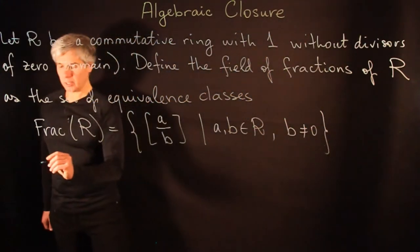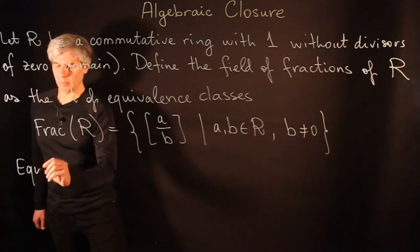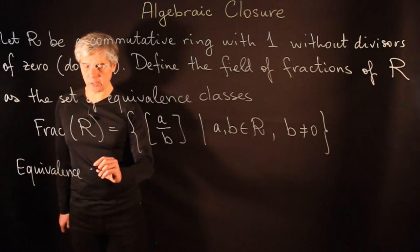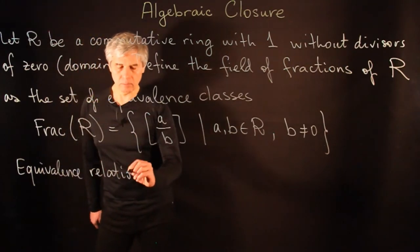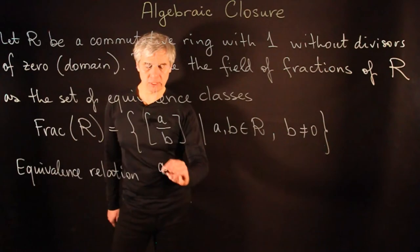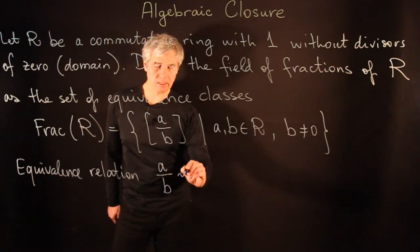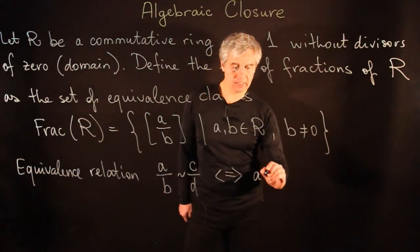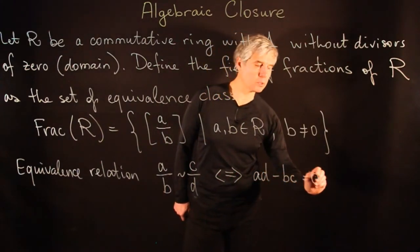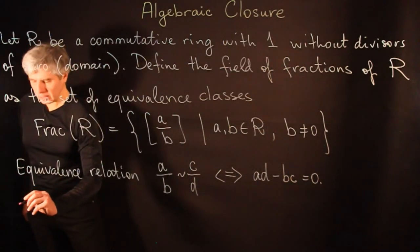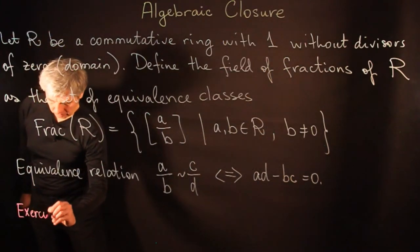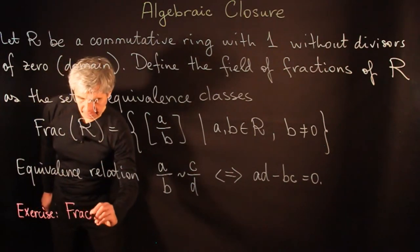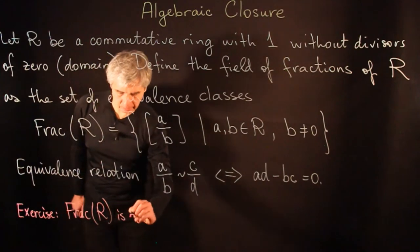The equivalence relation is the same as we use in rational numbers. We say the fractions A over B and C over D are equivalent if and only if AD minus BC is equal to 0. It's an easy exercise to show that this set of fractions is indeed a field.